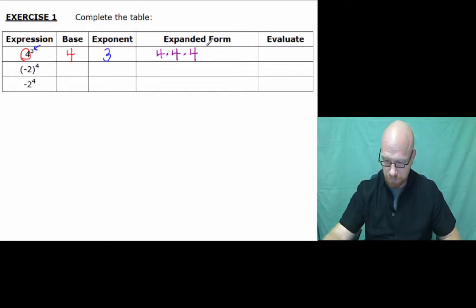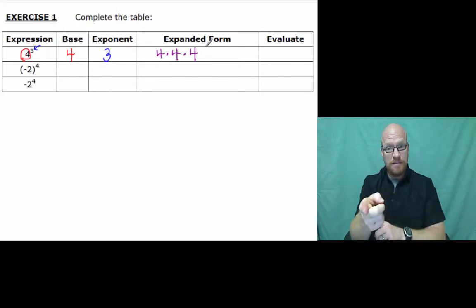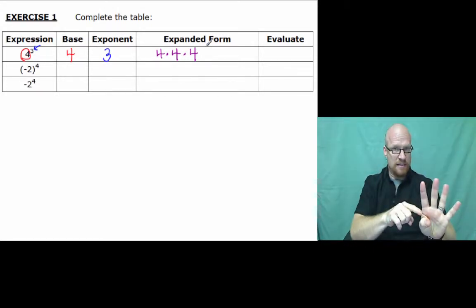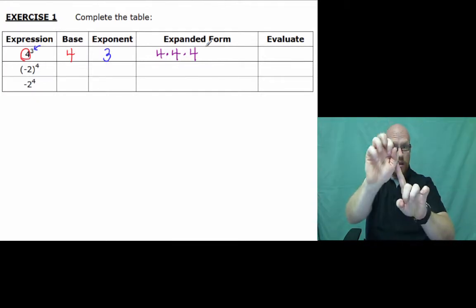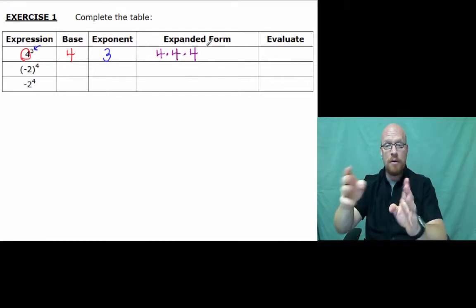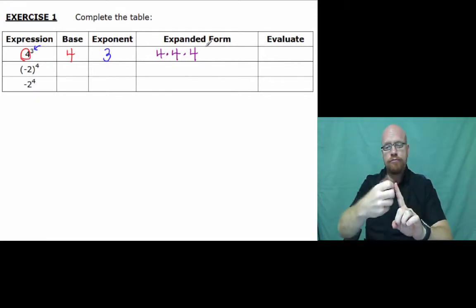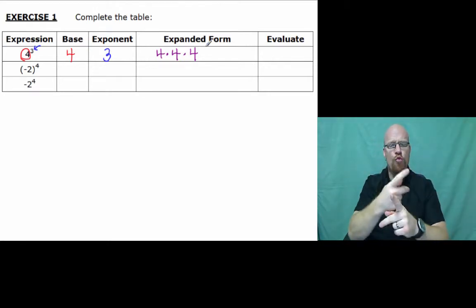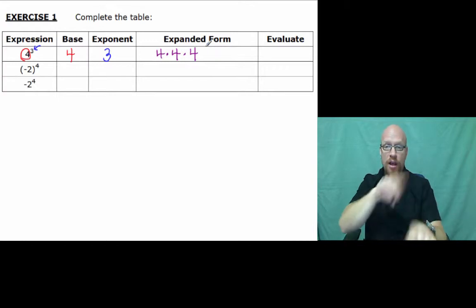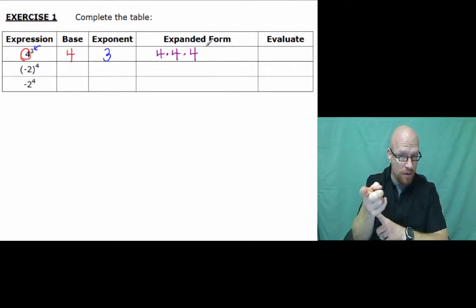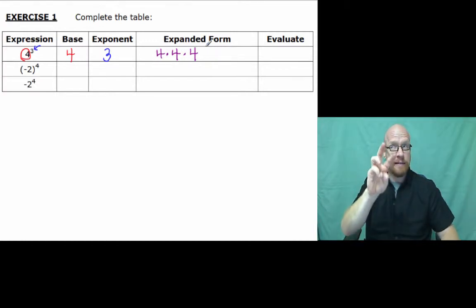So here's what we have. We have 4 as the base, noted in red here. We have the third, 3 as the exponent. And the expanded form means, as we write it out, longhand, so to speak. 4 times 4 times 4 equals 4 to the third. And the answer is 4 times 4, yep, it's 64.